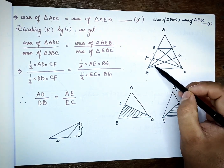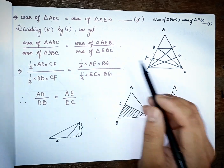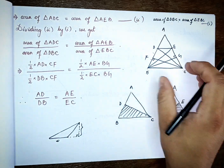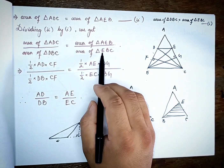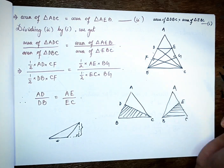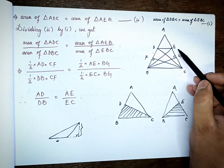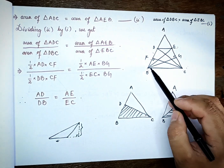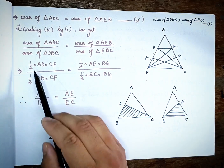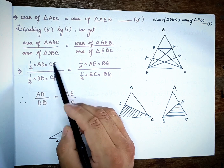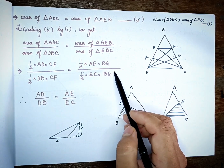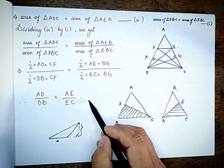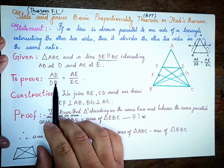Triangle EBC: base is BC, altitude is BG. Triangle AEB: base is AE, altitude is BG. So the CF and BG terms cancel when we divide the equations.